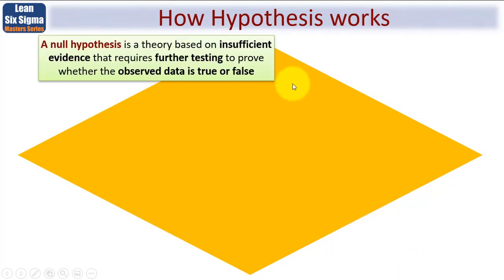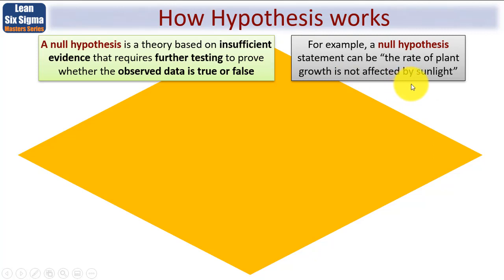So how exactly does hypothesis work? Well, there are two things, a null hypothesis and an alternative hypothesis. Stay with me. A null hypothesis is a theory, a proposition, based on insufficient evidence that requires further testing to prove whether the observed data is true or false. That's a very important first statement. It's what you first state, even though we don't yet have any real evidence. And certainly having captured and stated it, will then need testing to prove whether that observed data is right or wrong. For example, a null hypothesis statement can be, the rate of plant growth is not affected by sunlight. I think you and I both know instinctively the answer to that, but it's a good example, isn't it?